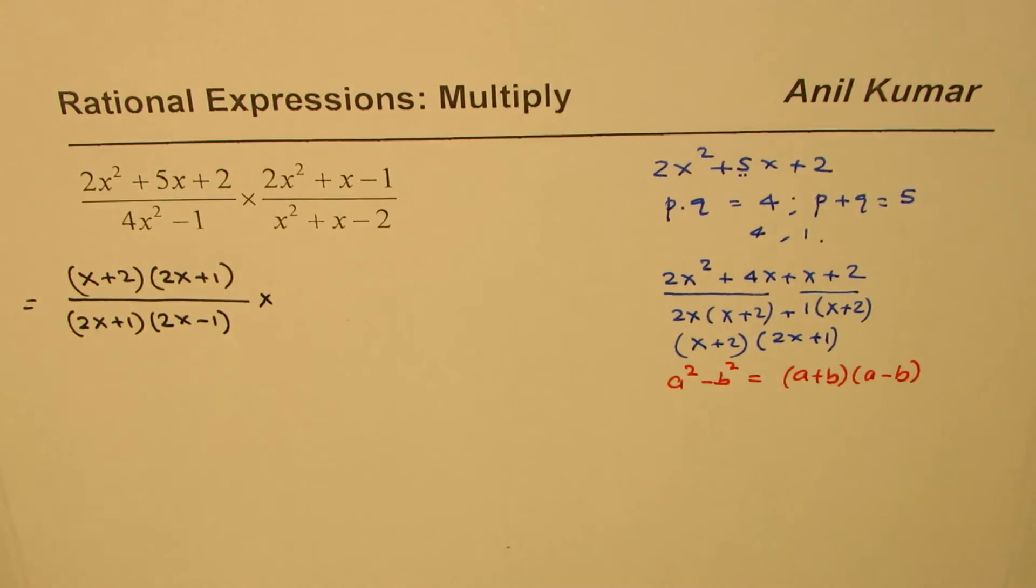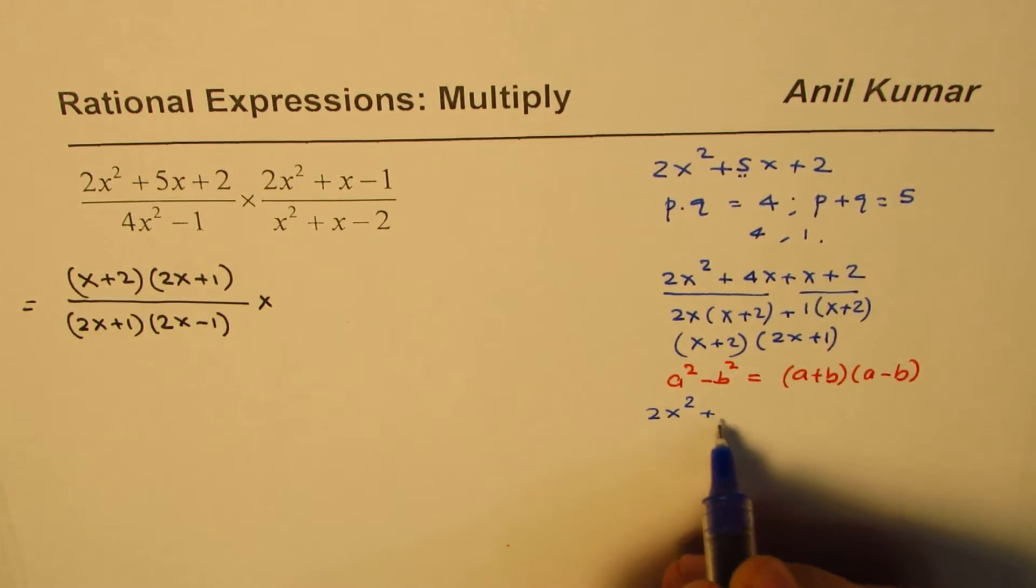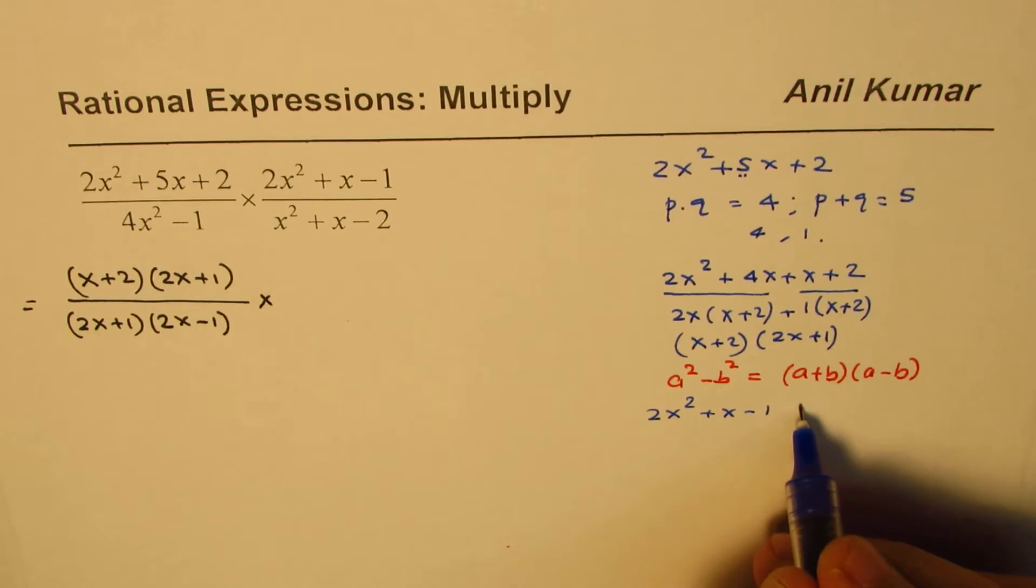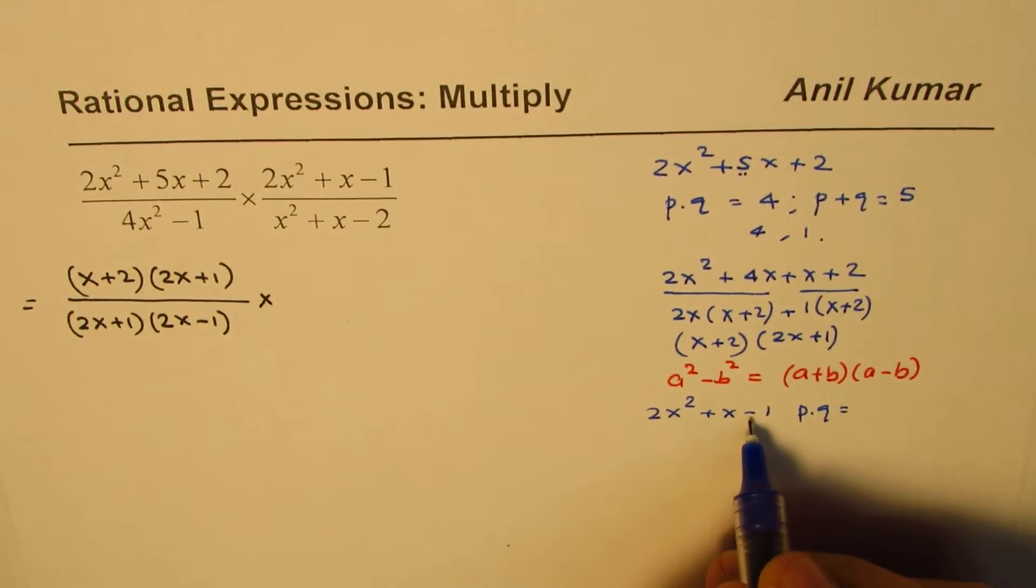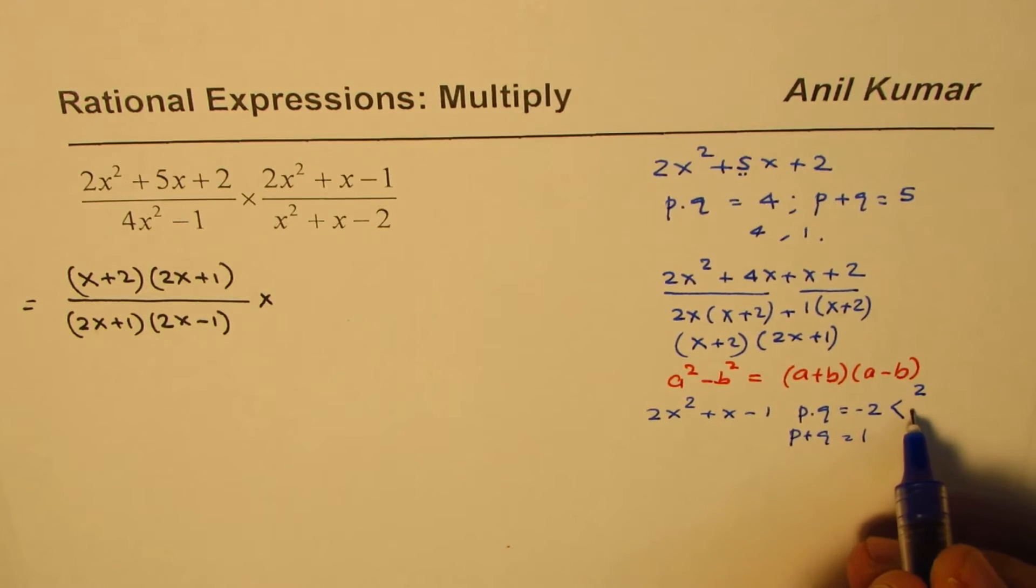Let's factor the other one, which is 2x squared plus x minus 1. Product, we are looking for minus 1 times 2, which is minus 2, and sum should be 1. So, bigger number is positive, smaller one is negative.